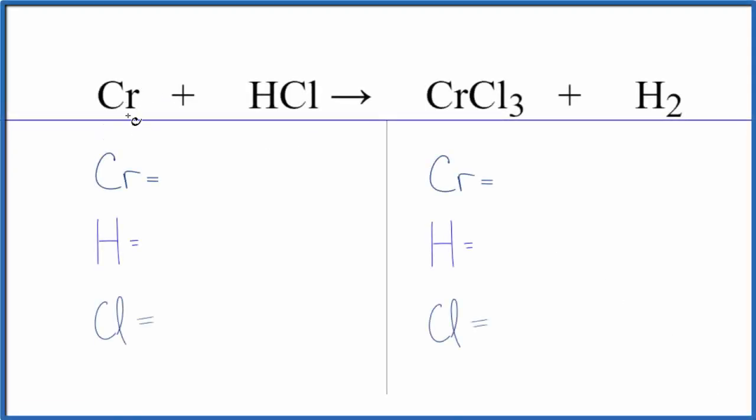In this video, we'll balance the equation for Cr plus HCl. So this is chromium plus hydrochloric acid. First thing we need to do is count the atoms up.